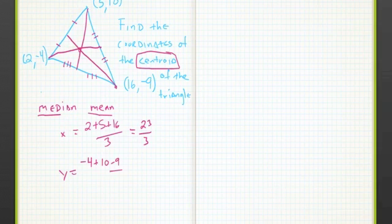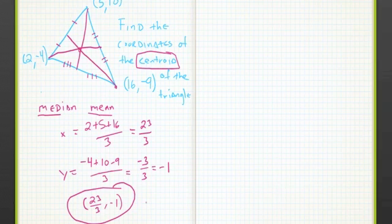We get 23 divided by 3, and then negative 4, 10, and 9. Add those up, divide by 3, we get negative 1. So our coordinates are 23 over 3 and negative 1.